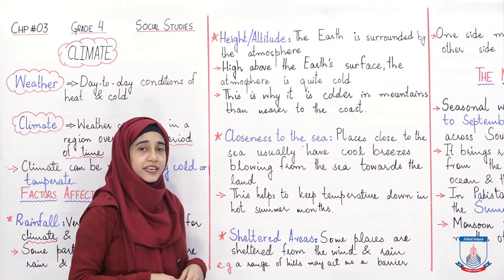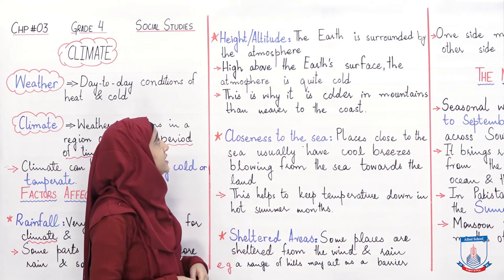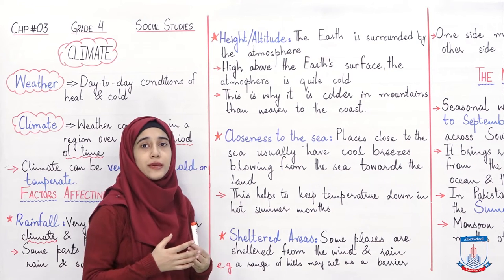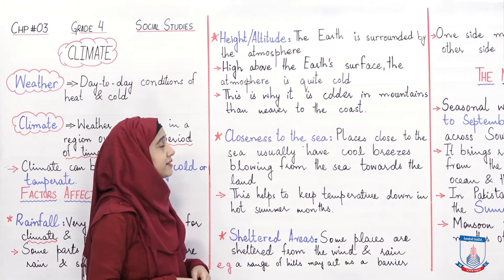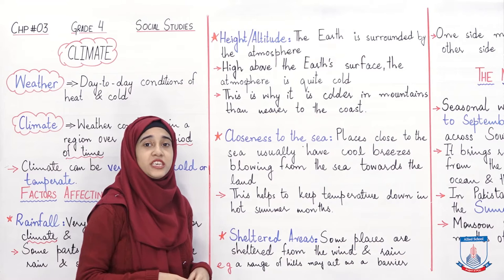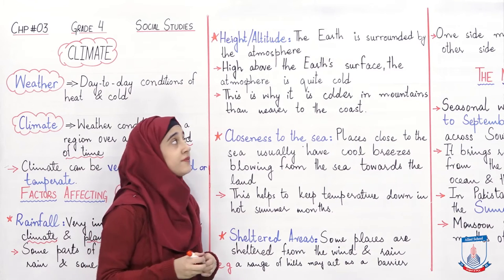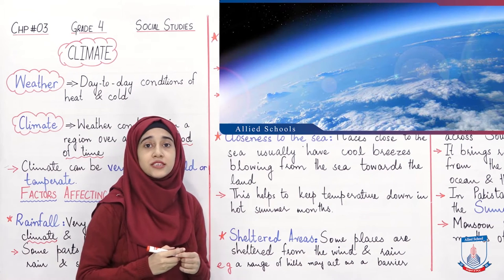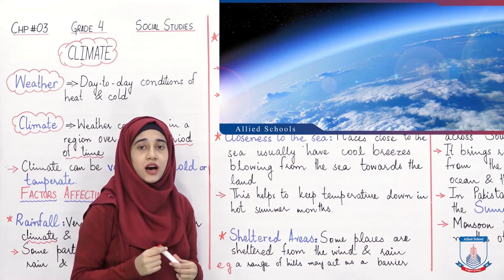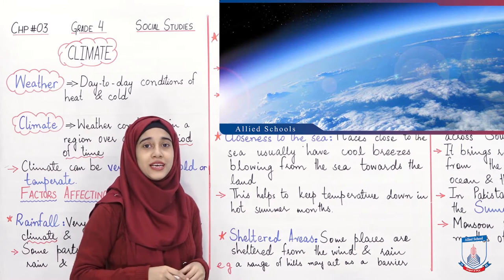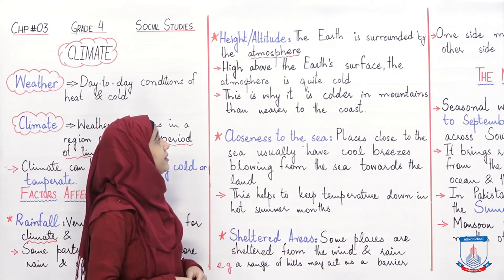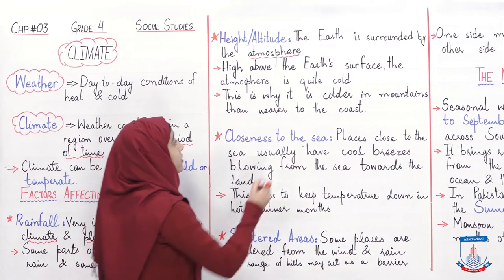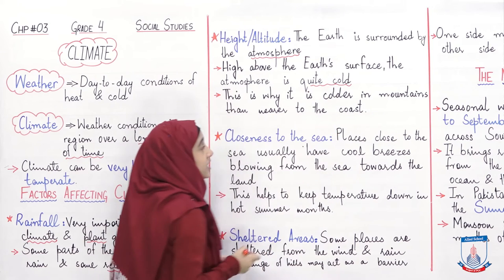Now talking about the second factor that affects climate — that is height or altitude. یعنی کسی بھی جگہ کی اونچائی بھی climate کو affect کرتی ہے. The earth is surrounded by the atmosphere — a circle of gases surrounding our earth. آپ atmosphere کی picture اپنی screens پر دیکھ سکتے ہو. High above the earth's surface, the atmosphere is quite cold — وہاں پر بہت زیادہ ٹھنڈ ہوتی ہے.